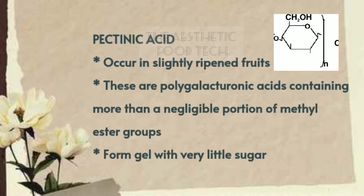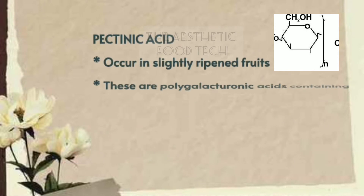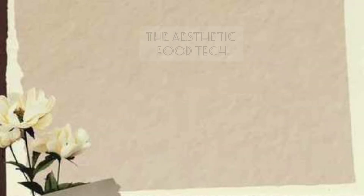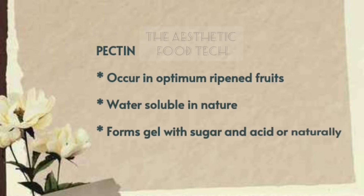Pectinic acid may occur in slightly ripened fruits. They are polygalacturonic acids containing more than a negligible portion of methyl ester groups. The main peculiarity is that pectinic acid is able to form gel with very little sugar — that is, in the presence of a very small amount of sugar.